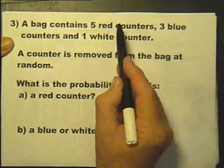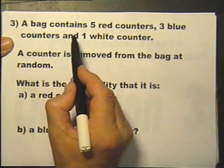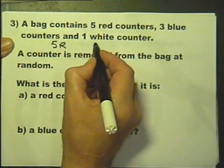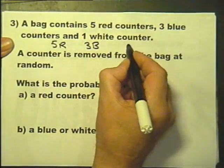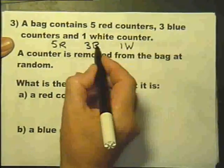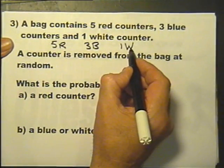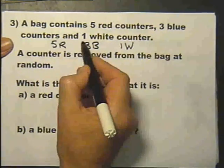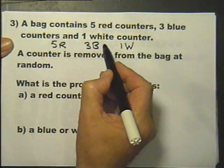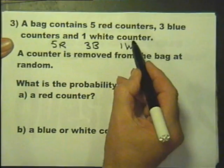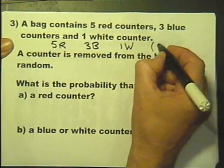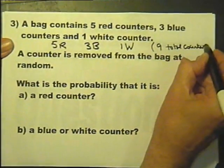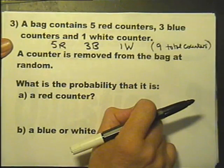A bag contains 5 red counters, 3 blue counters, and 1 white counter. So I'm going to write that in a shorter form underneath. Now you don't have to do that, but anything that makes the question easier for you to answer and helps you understand the question is a good idea. The examiner's not going to give me any extra marks for doing that. What I'm doing is making the question very clear in my mind. I've got 5 red counters, 3 blue counters, and 1 white. I'm going to add that up: that's 8, 9, 9 total counters. Again, that is for me to understand the question clearly, not the examiner.